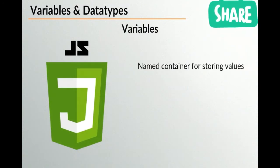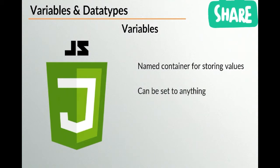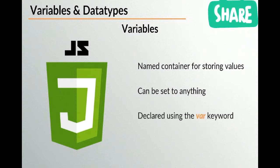You can set a variable to just about anything — a string, a number, an object, which we'll cover later. If you want to create a variable inside JavaScript, you need to use the var keyword. The var keyword is a special reserved word in JavaScript. If a browser ever comes across var, it will know that it needs to create a variable and store that information somewhere.